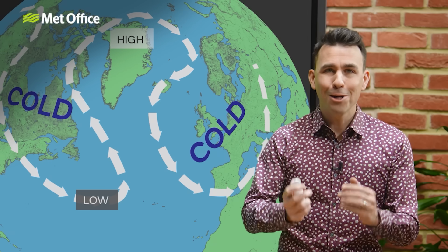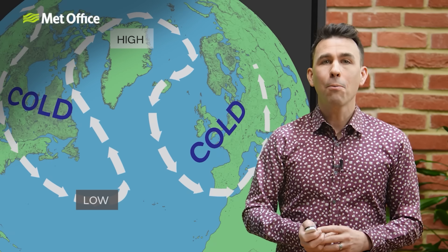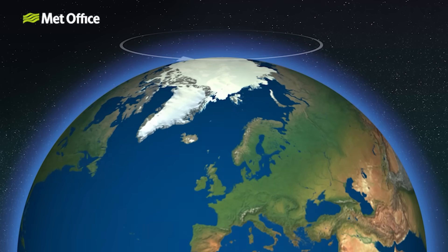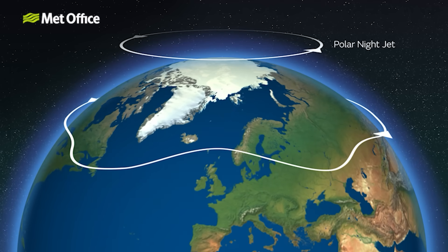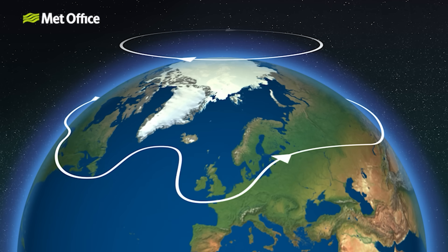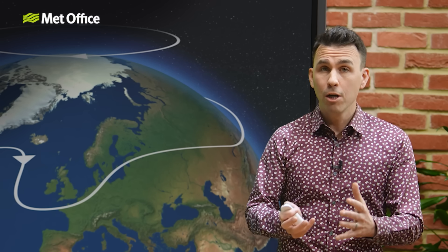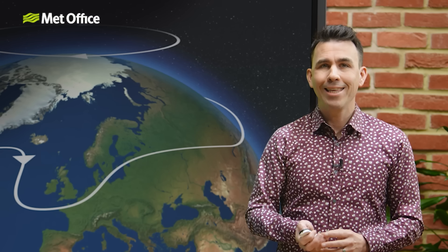But how do we know what the AO will do next? One clue comes from the polar night jet — a circulation of strong stratospheric winds circling the North Pole. This strengthens every winter as a pool of deep, cold air, known as the stratospheric polar vortex, forms. When the polar night jet changes speed or direction, it often contributes towards an upcoming shift in the AO.